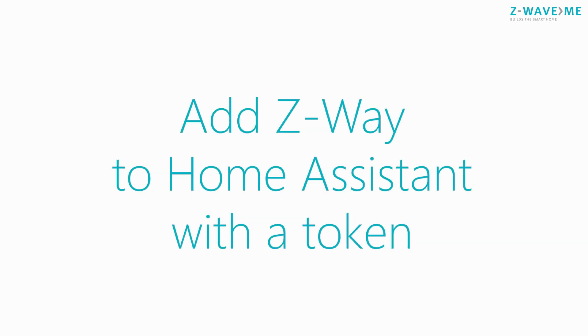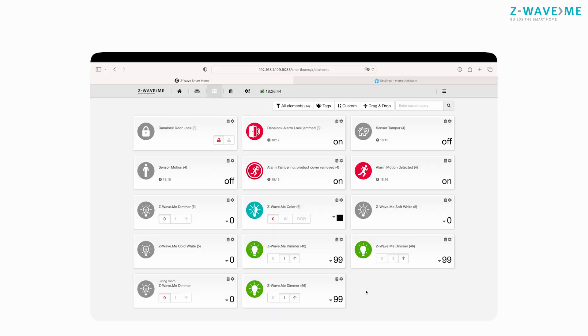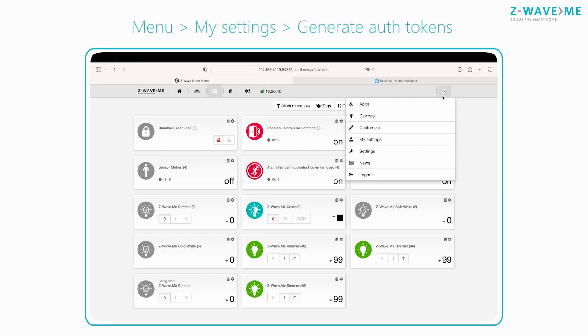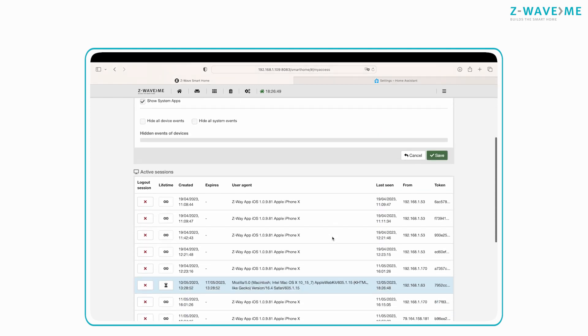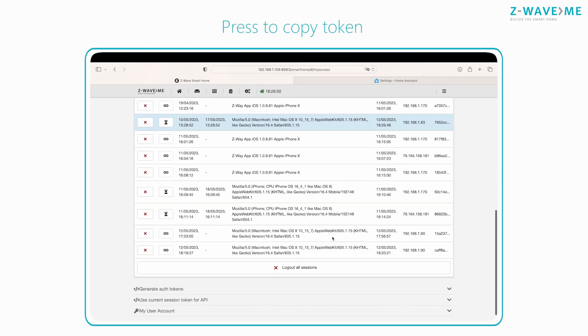To add Z-Wave to Home Assistant with a token, you need to get a token in the Z-Wave Smart Home interface. Click Menu, then My Settings, then Generate Auth Tokens. Press to copy the token.